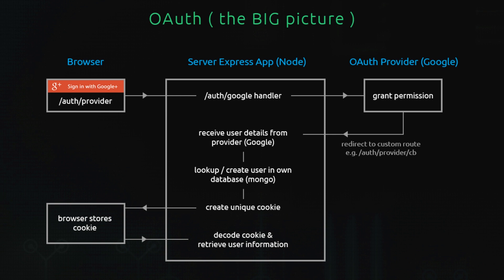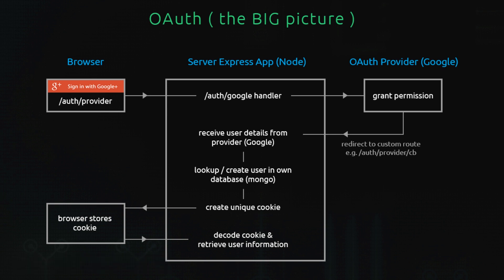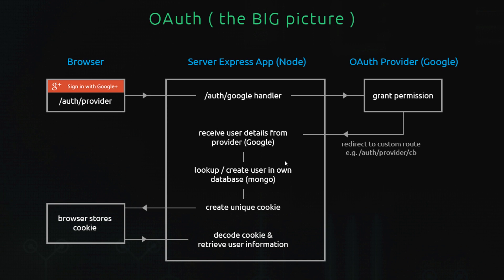Either way, at this step we're going to have our own version of that user record. Once we have that record, we need a way to tell the browser that we know who this person is and they're logged into our application. For any subsequent request they make — for example to their profile page, which requires authentication — we want to authenticate them without going through the whole process again. So at this point we create a unique cookie and send it to the browser. The browser stores that cookie so any future request it makes will send the cookie back.